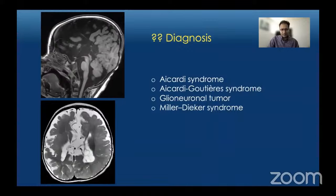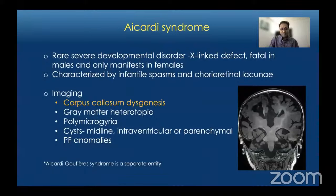This appearance is diagnostic of Aicardi syndrome. Aicardi syndrome is one of the syndromes associated with corpus callosum dysgenesis, and it has associated findings including gray matter heterotopia, polymicrogyria, cysts, and sometimes posterior fossa anomalies. It is a neurodevelopmental disorder caused by an X-linked defect, so it is fatal in males and only manifests in females. Clinically it is characterized by infantile spasms, and on fundoscopic exam you may see chorioretinal lacunae.